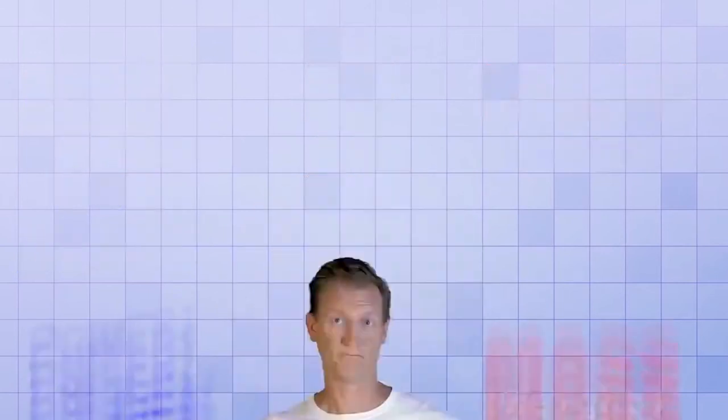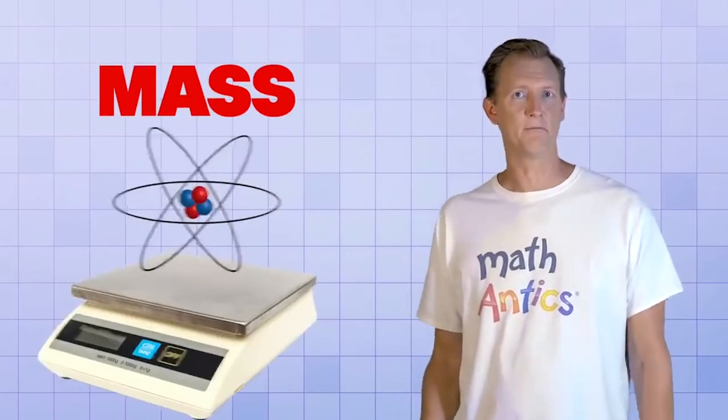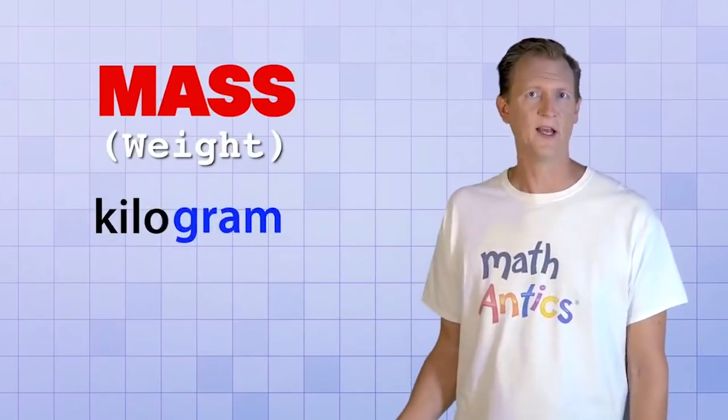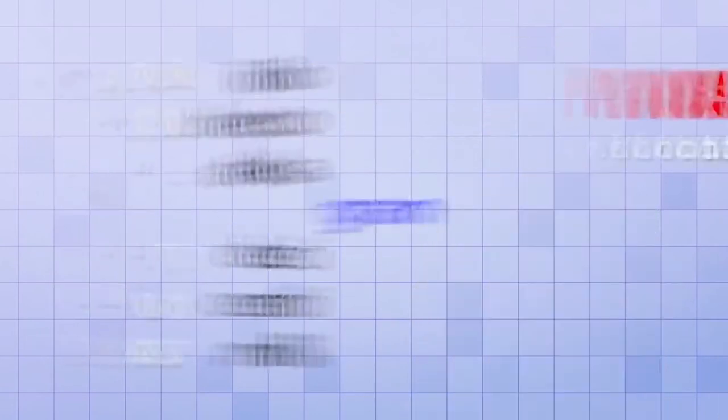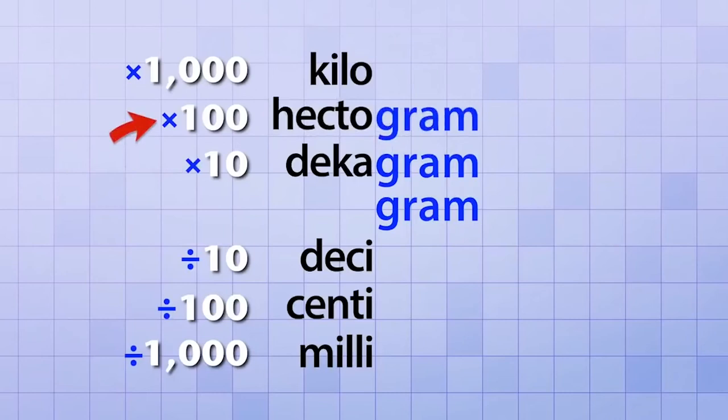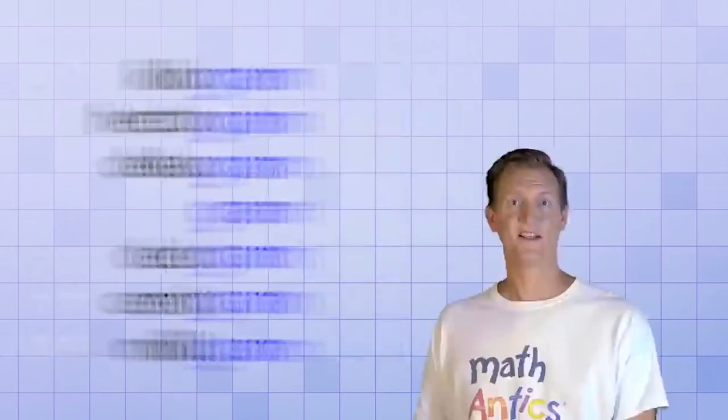There's another important quantity that uses this same powers of 10 prefix pattern, and that's mass, or weight. Mass is a measure of how much actual matter an object contains, which is closely related to its weight on Earth. In the metric system, the basic unit of mass is technically the kilogram, but we're going to start with just the plain old gram. For reference, a gram is the amount of mass equivalent to 1 cubic centimeter of water. A decagram is 10 times bigger than a gram, a hectagram is 100 times bigger, and a kilogram is 1000 times bigger. And similarly, a decigram is 10 times smaller, or one-tenth of a gram, a centigram is 100 times smaller, or one-hundredth of a gram, and a milligram is 1000 times smaller, or one-thousandth of a gram. The same pattern is used.